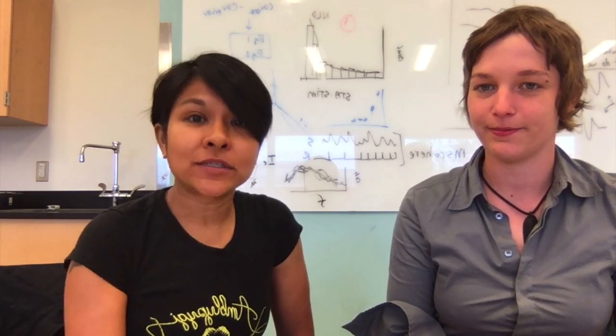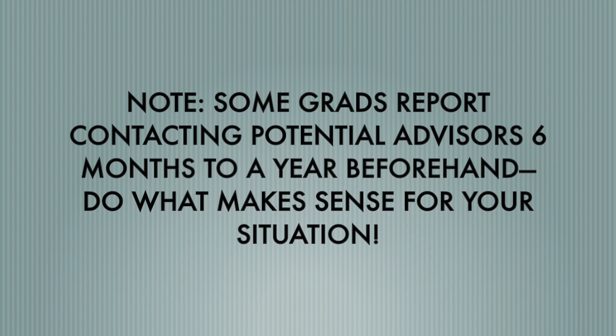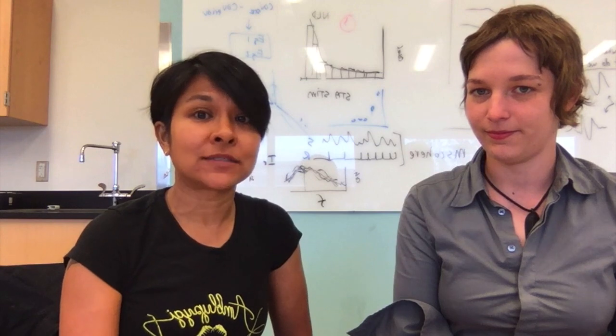So, number one, when should you start? As a general rule, about two or three months before the deadline for any given program is a good time to start emailing professors. By that time, faculty are likely to know whether or not they're going to take on any new students for that year. And UW Biology's application is usually due around the beginning of December, so anytime mid-September to October is a good time to start.